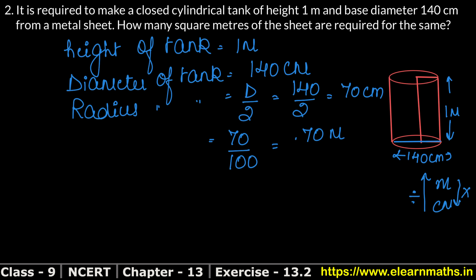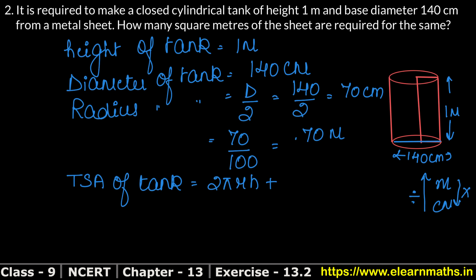How much sheet is required to make a closed tank? We need the total surface area of the tank. Total surface area equals the curved surface area plus the upper and lower circle areas: 2πrh + 2πr². Now we will put in the values.